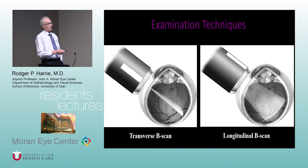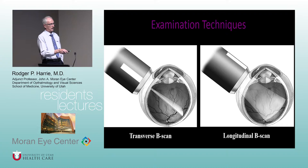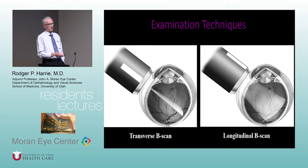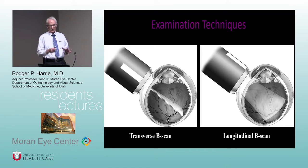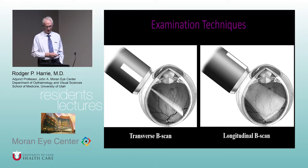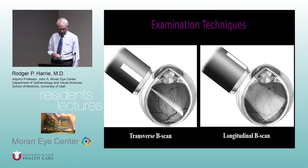In transverse view, you're parallel to the limbus, sweeping across the eye in an anterior-posterior direction. In longitudinal view, you're perpendicular, going superior to inferior. For a lesion in this area, you'd scan it both ways — transverse and longitudinal — and you can also do oblique views, but these two are the major ones used to characterize lesions and determine the plaque dimensions.